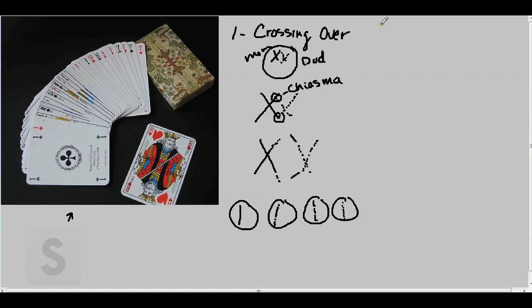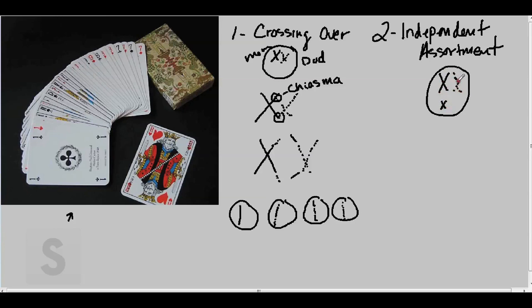The second shuffle comes from a process called independent assortment. We talked about this earlier. This was one of Mendel's principles. Let's draw out an example where we have two sets of chromosomes. Again, from mom is going to be the solid, and from dad is going to be the dotted.